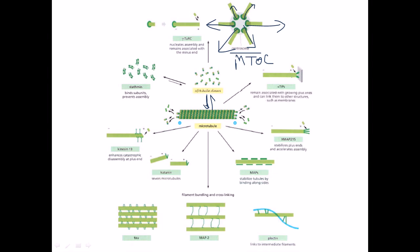Microtubule growth is needed in some cases because the astral spindles generated during cell division from the centrosome sometimes have to interact with the cell membrane. +TIP proteins help microtubules attach and link with the cell membrane or different membrane-like structures.